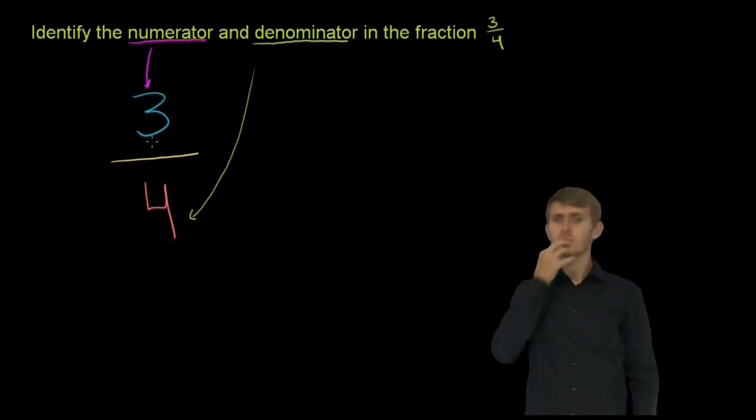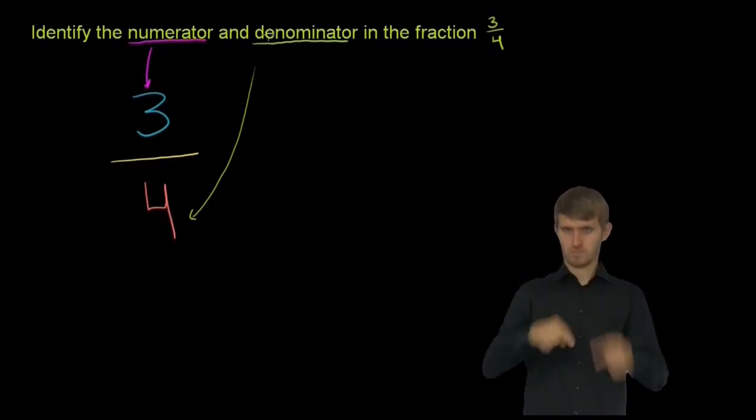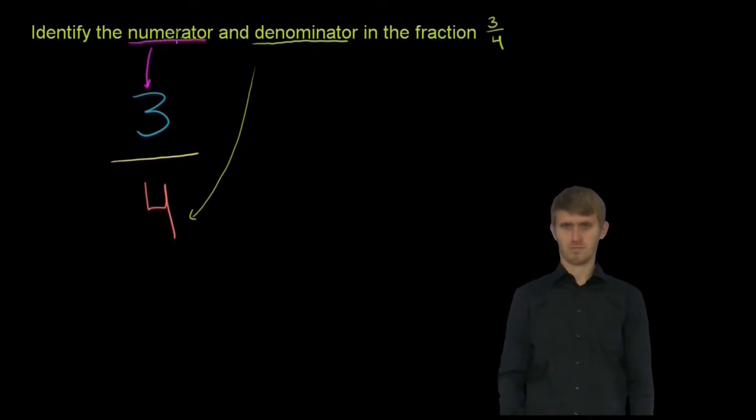So if they say, what's the numerator? 3. What's the denominator? It's 4, just the number on the bottom. They could have just called this the number on the bottom. They could have just called this the number on top.